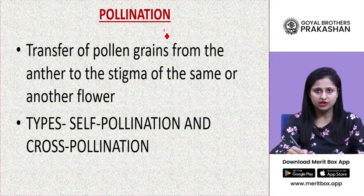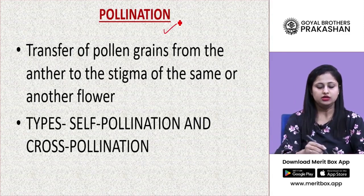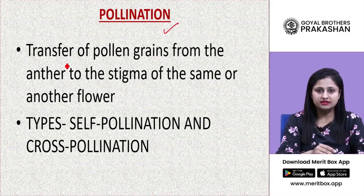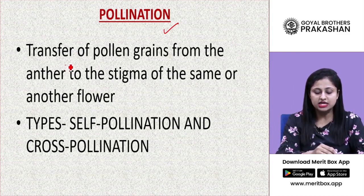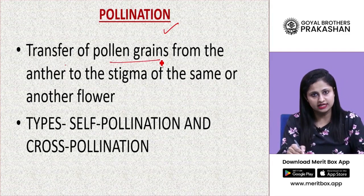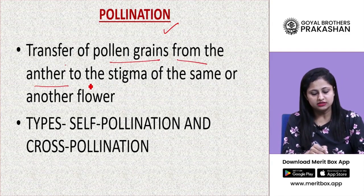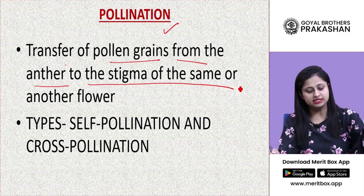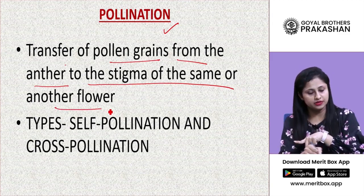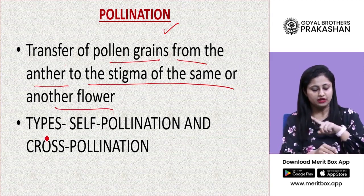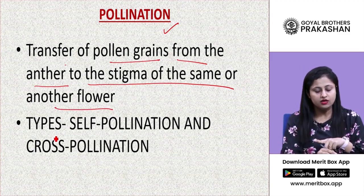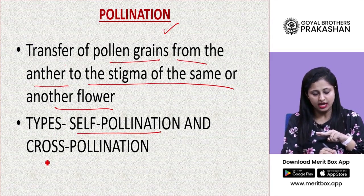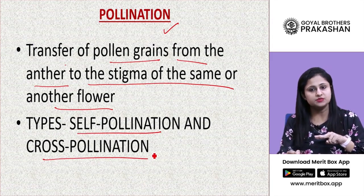Next is pollination. Pollination is the process in which there is the transfer of pollen grains from the anther to the stigma of the same or another flower. Pollination is of two types: self-pollination and cross-pollination.